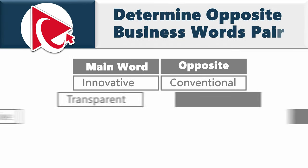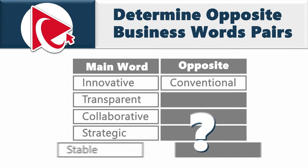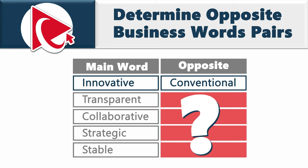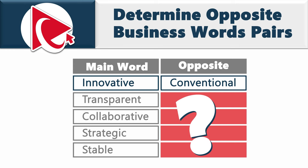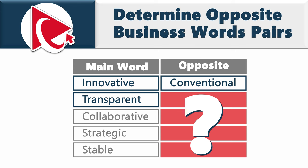Your goal is to determine opposite business word pairs. You're already presented with one pair: innovative versus conventional. You need to find the opposite business word pairs for: transparent, collaborative, strategic, and stable.